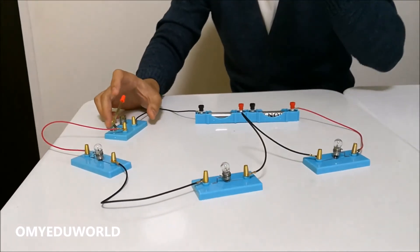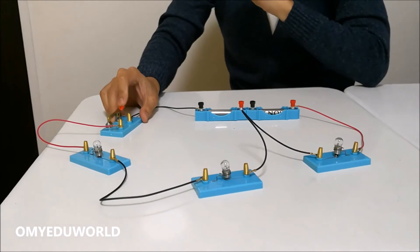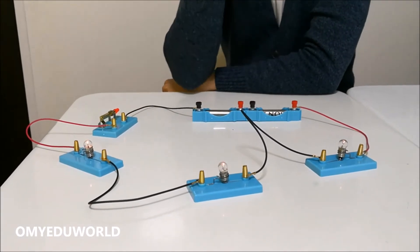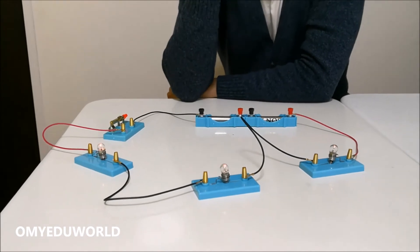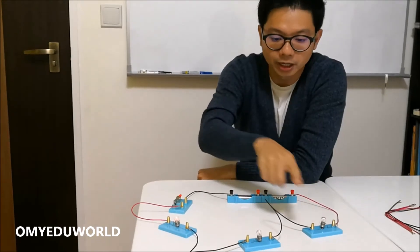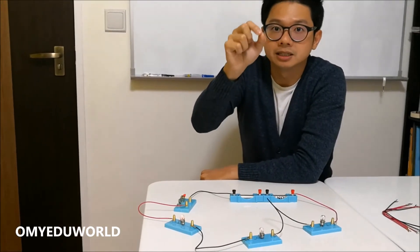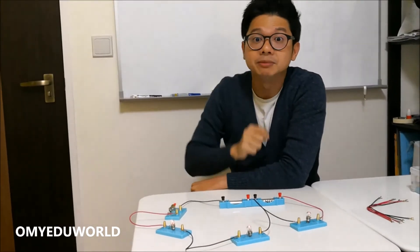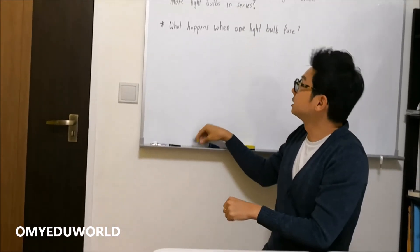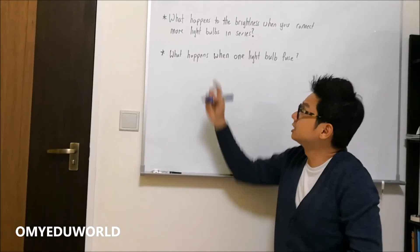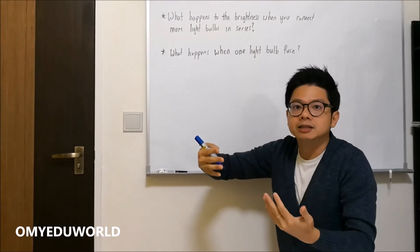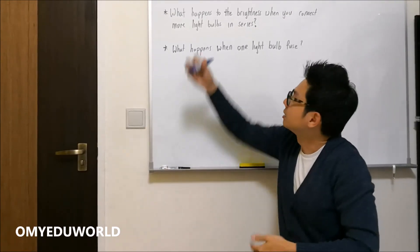So I want you to see what happens to the brightness. So I think it's very obvious. Just now the light bulb was quite bright, but after I put in the third light bulb, the brightness actually becomes lower. So it becomes dimmer. Do you see it? So this is a typical exam question that we will be asked. So of course the answer to this question is that the more light bulbs you put in, the light bulb will become dimmer.